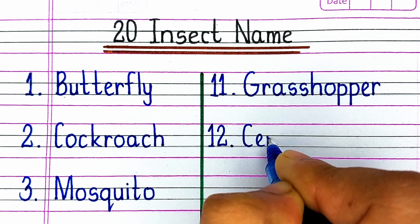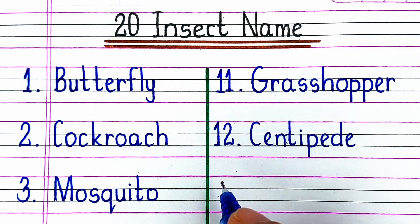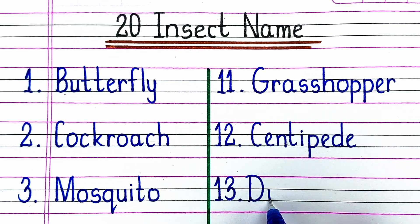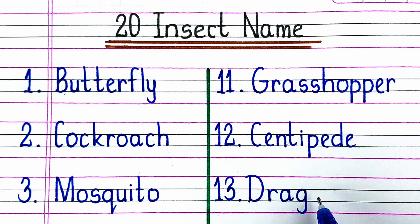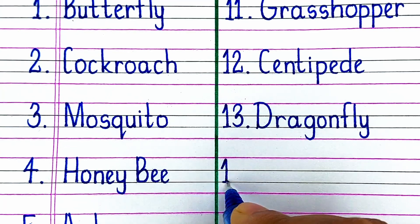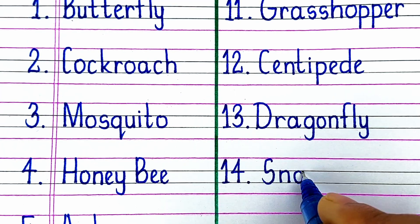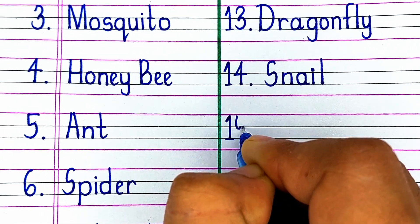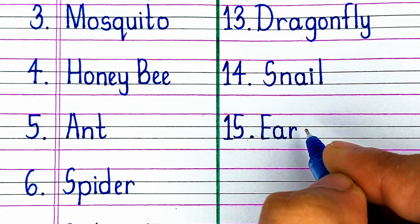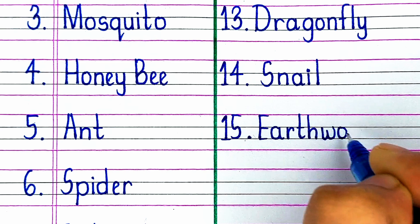Next is C-E-N-T-I-P-E-D-E, Centipede. Next is D-R-A-G-O-N-F-L-Y, Dragonfly. Next is S-N-A-I-L, Snail. Next is E-A-R-T-H-W-O-R-M, Earthworm.